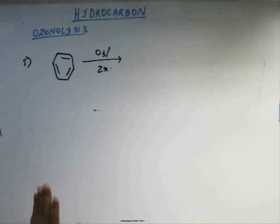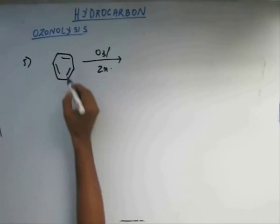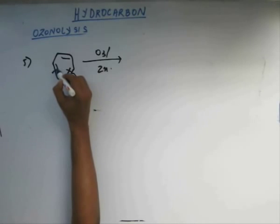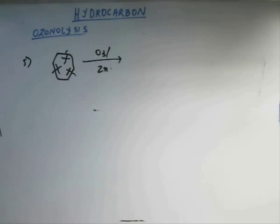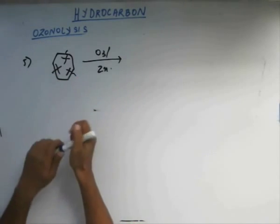But nevertheless, if we take the reaction condition to extreme and carry out ozonolysis, then there are 3 pi bonds, so we will carry out ozonolysis on all the pi bonds. We will break this pi bond, we will break this pi bond, and we will break this pi bond — ozonolysis on all 3 pi bonds. So now 3 sections are going to be carved out of this benzene.